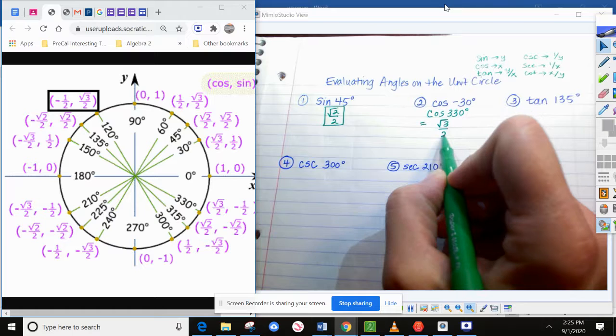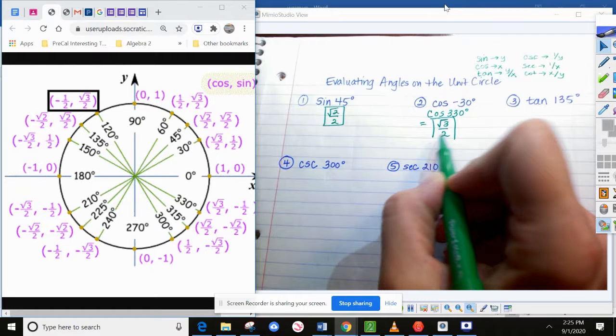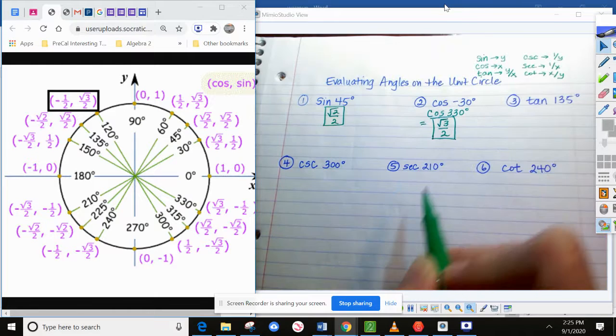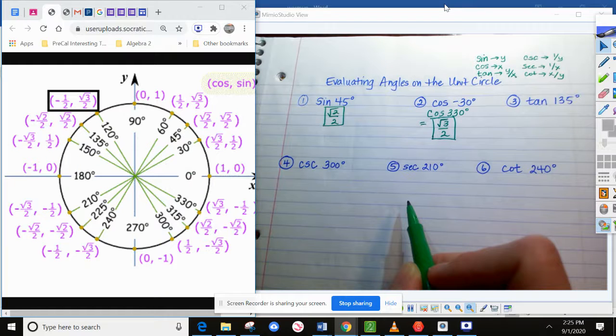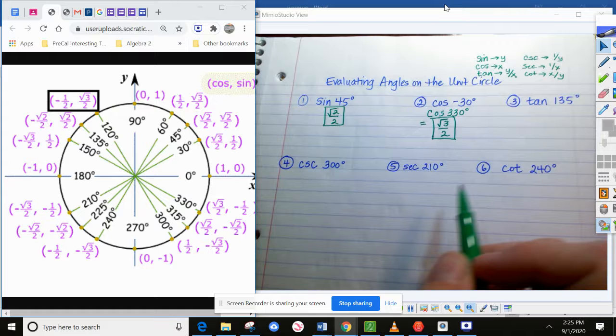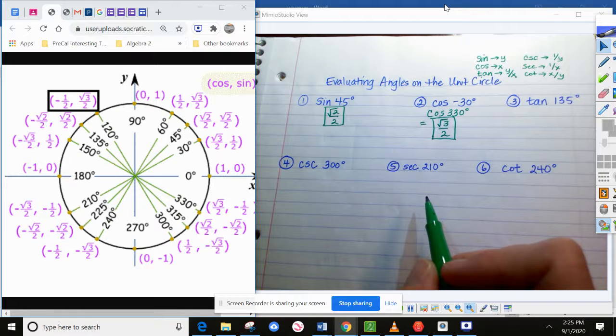Sine and cosine are straightforward. It's the x coordinate, it's the y coordinate, and then you're finished. When it comes to all these other ratios, you do need to take maybe a few more seconds to figure out what they need you to do to make them simplify.